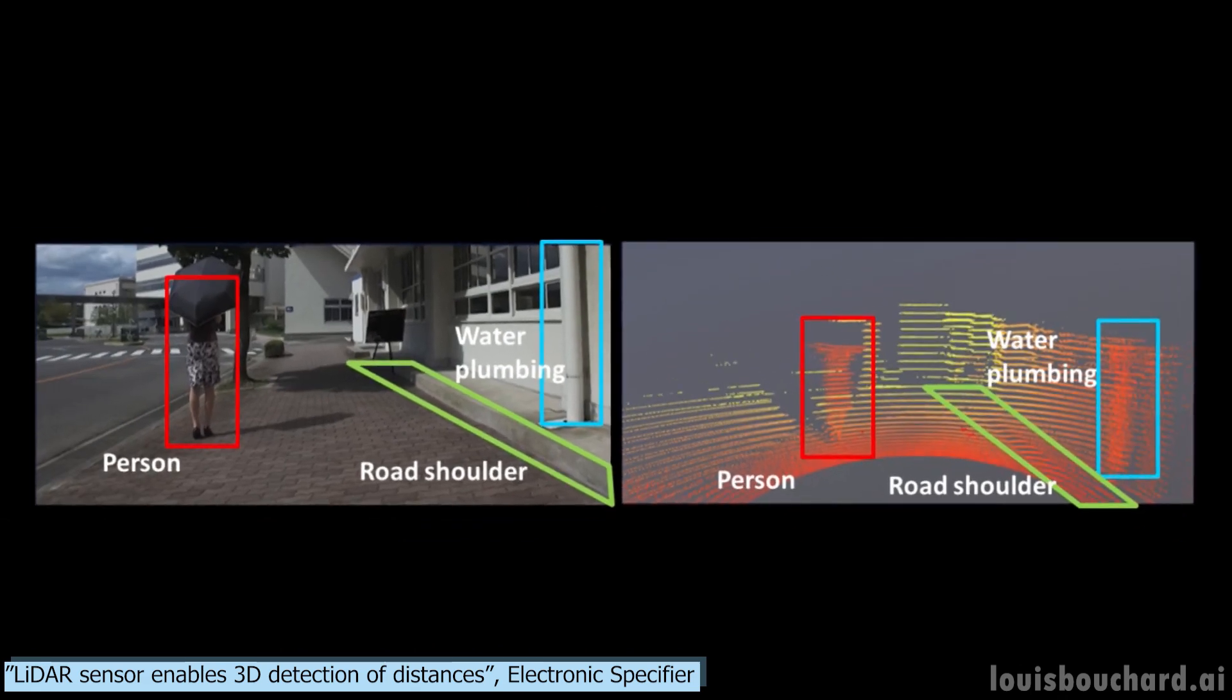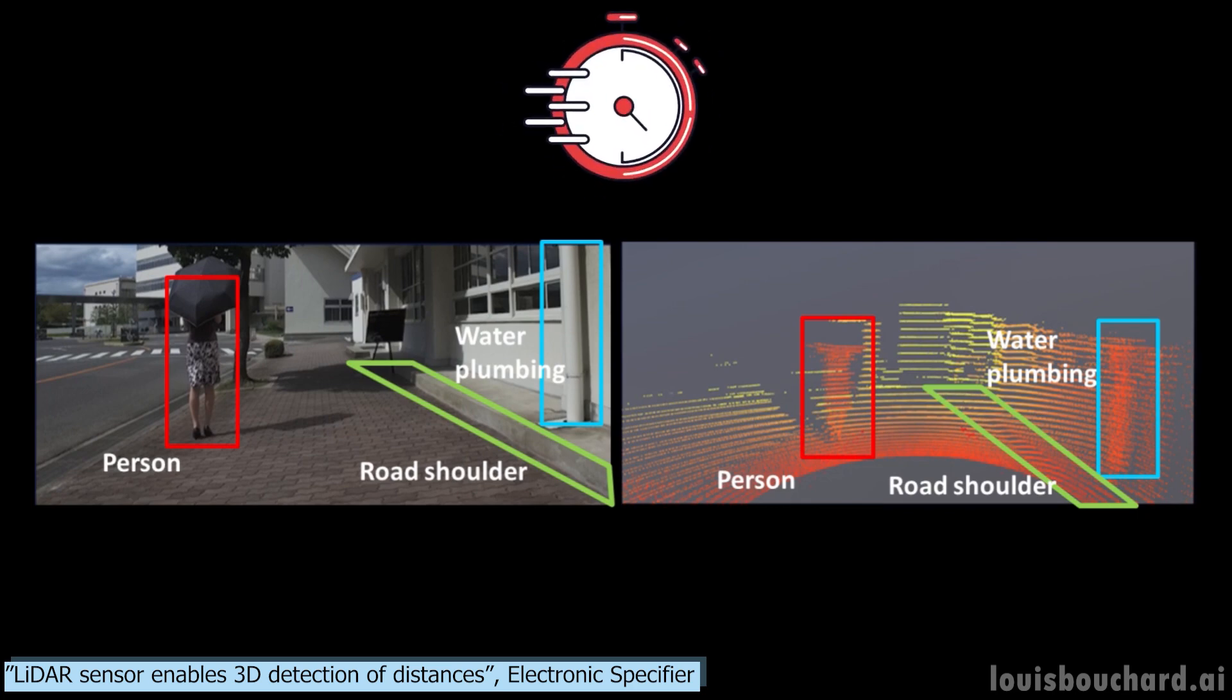These data points are called point clouds, and it just means that what we will see are just many points at the right positions, creating some sort of 3D model of the world. Here, you can see how LiDAR on the right isn't that precise to understand what it sees, but it's pretty good to understand depth with very little information, which is perfect for efficiently computing the data in real-time, an essential criteria for autonomous vehicles.